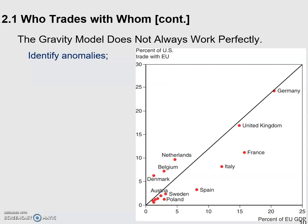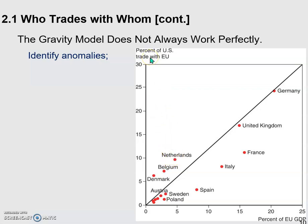Let's revisit the empirical evidence we discussed in the previous video. The vertical axis is the percent of US trade with the EU, and the horizontal axis is the percent of EU GDP — in other words, the relative size of each European economy in the EU. The vertical axis shows the relative share of these economies' trade with the US compared to total trade between the US and EU.